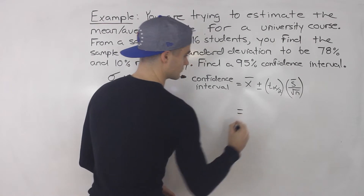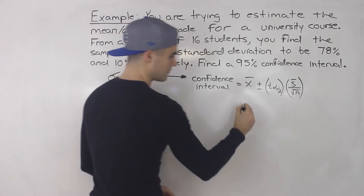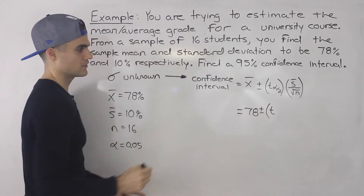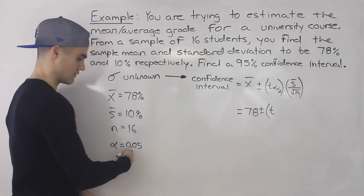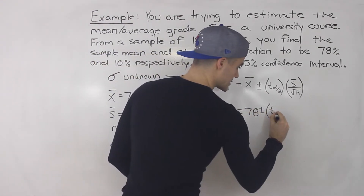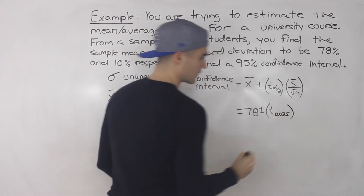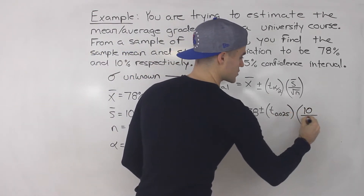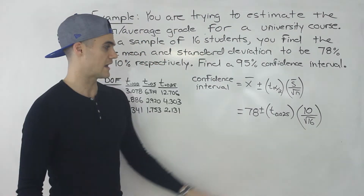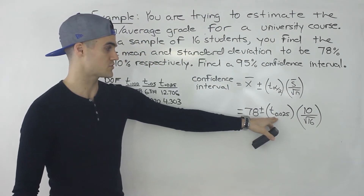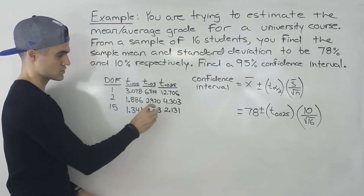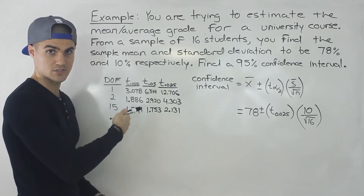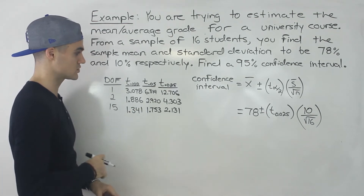So if we plug everything in, the sample mean is 78 plus or minus. Now the t-value at alpha over 2 — notice that alpha is 0.05, so that is 0.025. And then the sample standard deviation is 10% over the square root of the sample size which is 16. This t subscript 0.025, we're going to have to get from the t-table. I wrote out a portion of the t-table here, and there's a link in the description box if you want to print it out as a reference.